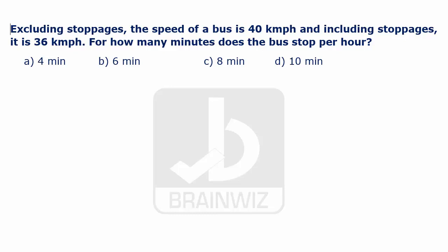In this, it has been told, excluding stoppages, the speed of the bus is 40 km per hour. But when we include the stoppages, that speed is 36 km per hour.